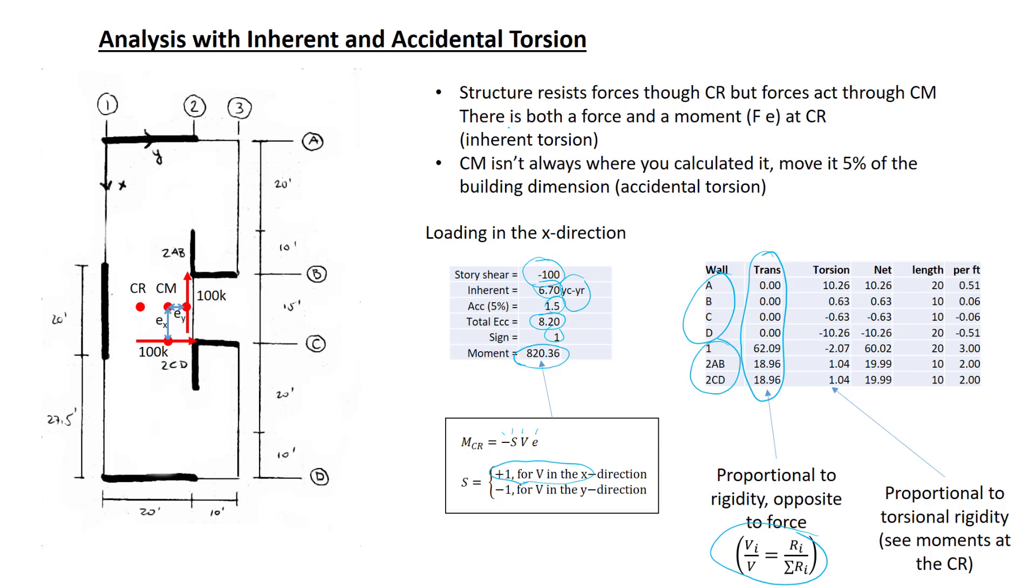Now we look at the torsional response. Take the exact result that we had previously. Multiply it by the moment here of 820 kip-feet, and we get these values. Now the net force is simply the sum of these two, so the net force is the actual force that's experienced in the wall. For purposes of design, I'm dividing it by the length of the wall to get a shear force per unit length.